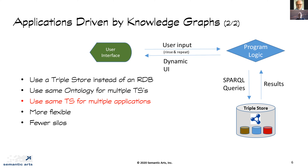One critically important thing: you can use the same schema — the same ontology — for multiple triple stores. You design your ontology for employees, software, hardware, etc. And you can also use a single triple store for multiple applications — that's just not possible with relational technology. Generally speaking, you get a lot of increased flexibility, fewer silos, and all the sorts of benefits the ontology community is already quite familiar with.